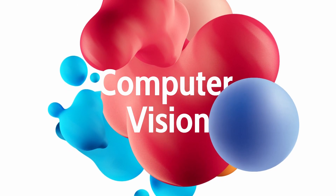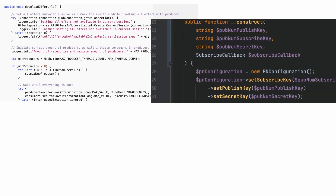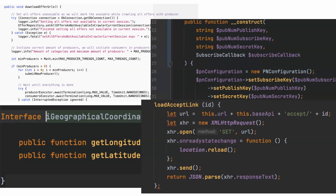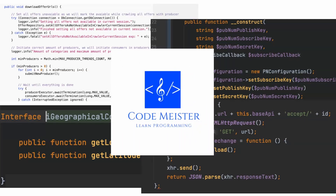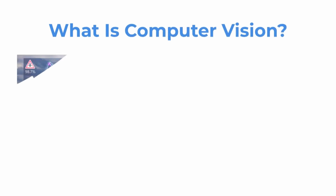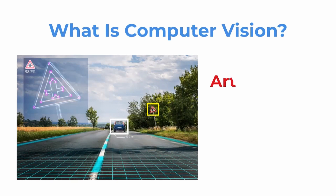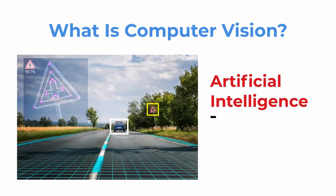Today, we will explain how computer vision works. What is computer vision? Computer vision is the process of using computers to interpret and understand digital images. It is a rapidly growing field that is being used in a variety of industries, from medical diagnosis to self-driving cars.